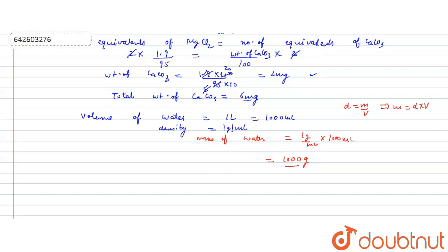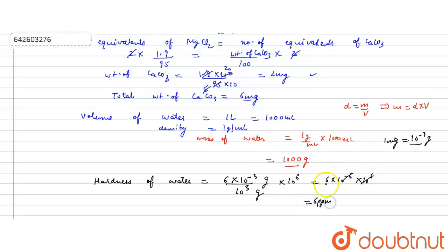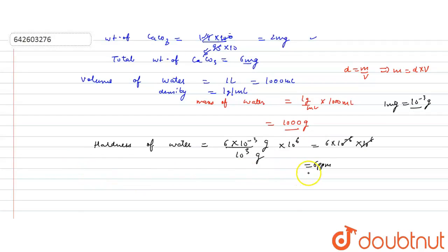Hardness of water in ppm = total mass of CaCO₃ / mass of water × 10⁶. Total CaCO₃ = 6 mg = 6 × 10⁻³ g; mass of water = 1000 g = 10³ g. So hardness = (6 × 10⁻³ / 10³) × 10⁶ = 6 ppm. The hardness of water in terms of ppm is 6 ppm.